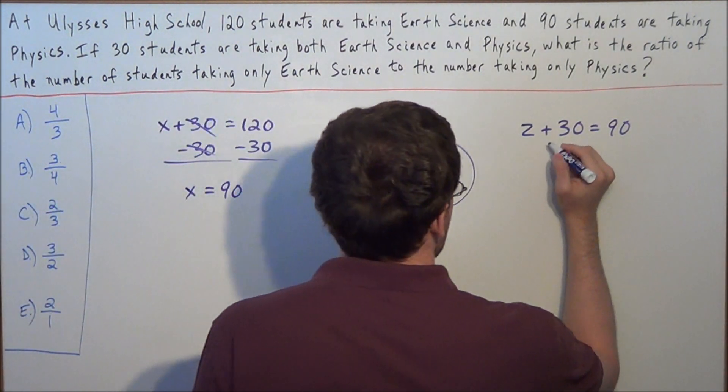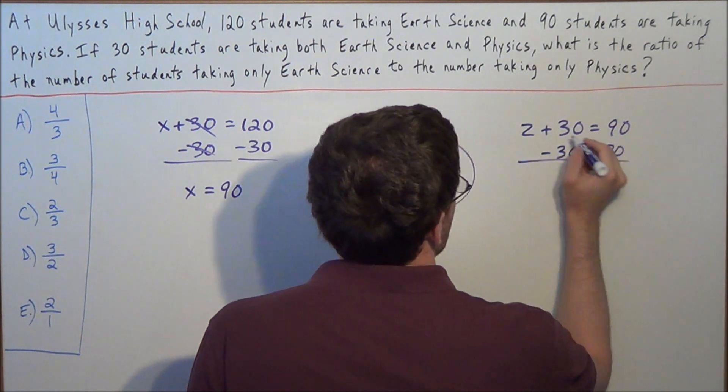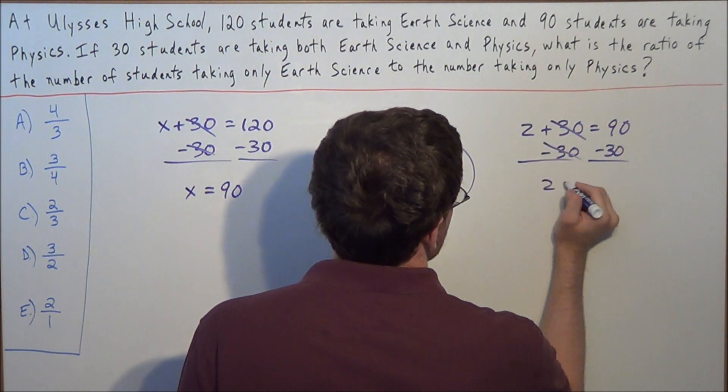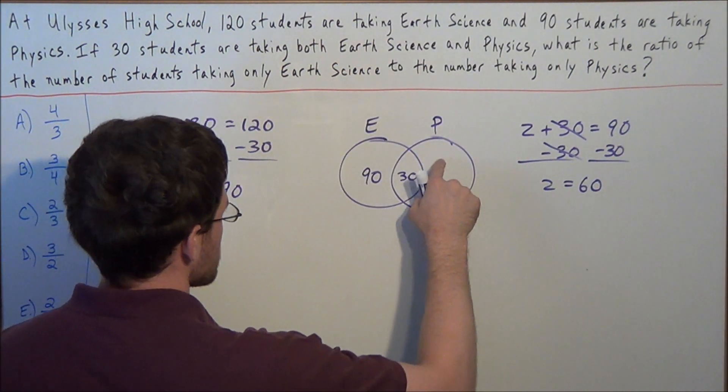So now to solve for Z, we're going to subtract 30 from both sides. And we have Z is equal to 60. So now we can replace this variable Z with 60.